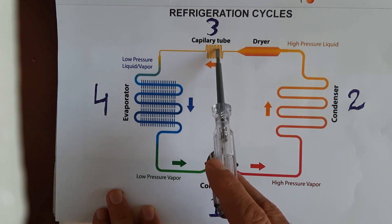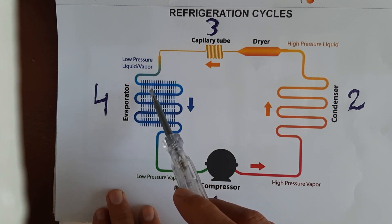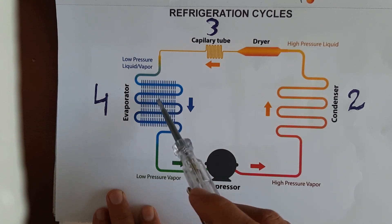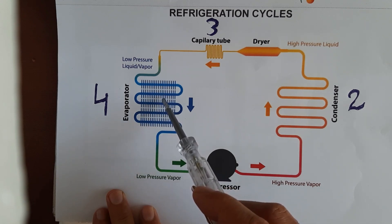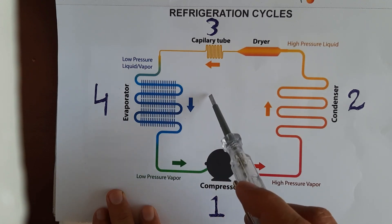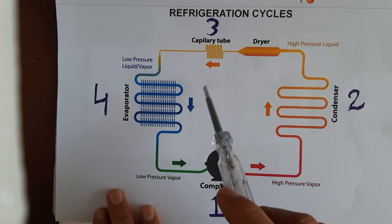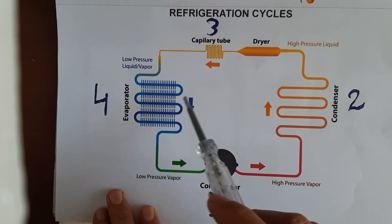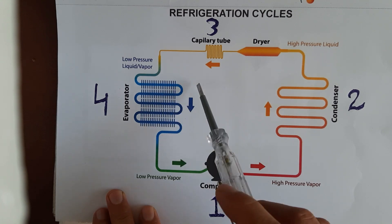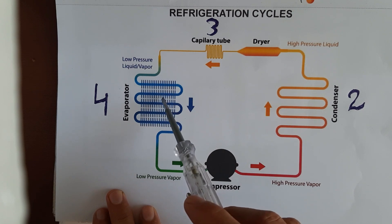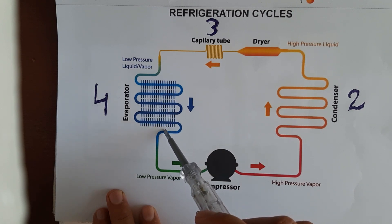After the condenser, the refrigerant enters the capillary in liquid form. The capillary controls the liquid and releases it into the evaporator as low-pressure liquid vapor. For example, if you keep water in a fridge it gets colder — that cold comes from the evaporator. The liquid refrigerant absorbs that heat and changes from liquid to vapor.